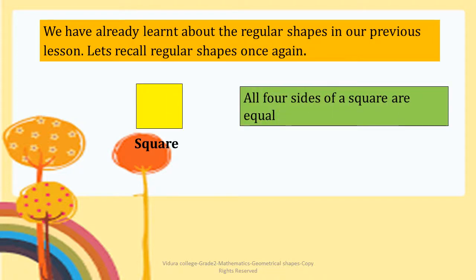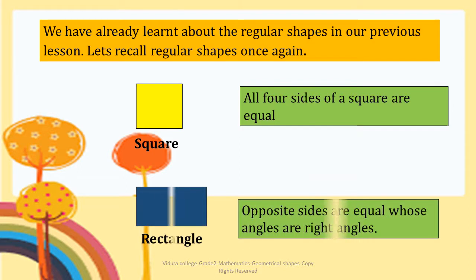Square — all four sides of a square are equal. Rectangle — opposite sides are equal and its angles are right angles.